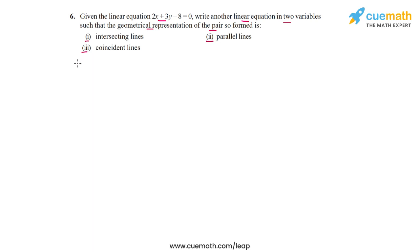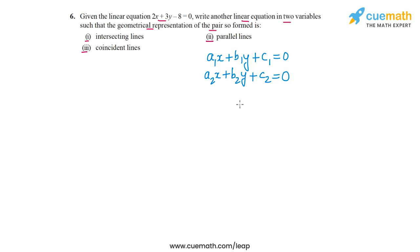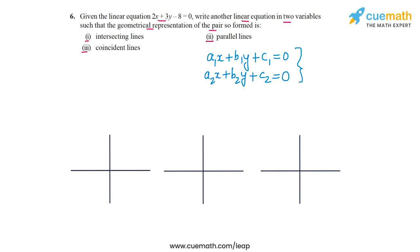To understand the key idea, let's take any general pair of linear equations: a1x plus b1y plus c1 equal to 0 and a2x plus b2y plus c2 equal to 0. There are three possibilities for the lines representing this pair. The first possibility is that the lines intersect, and this will happen if a1 by a2 is not equal to b1 by b2 — meaning the pair has a unique solution.